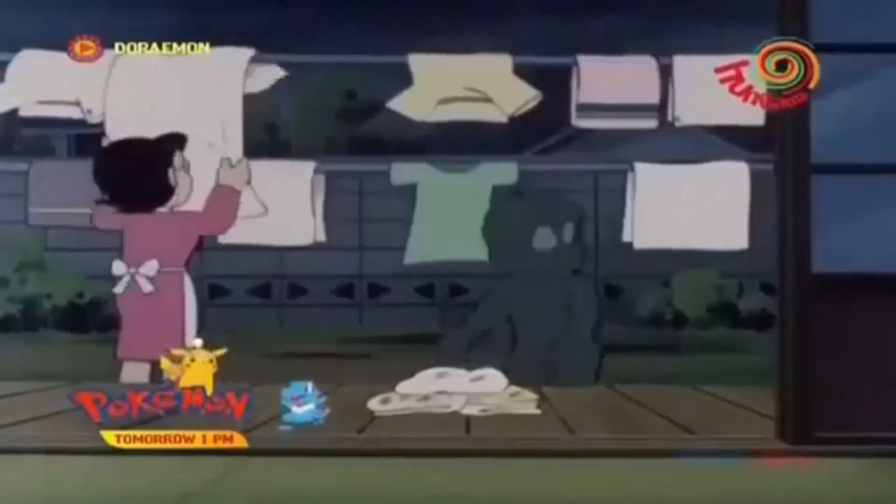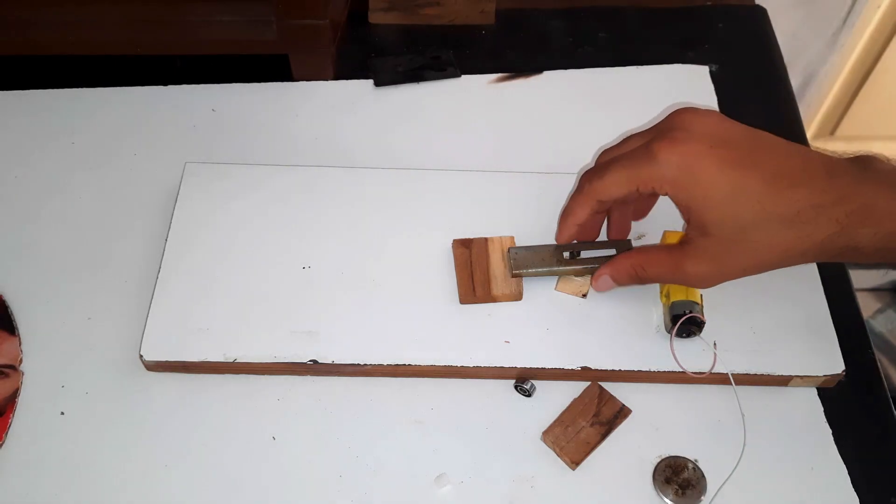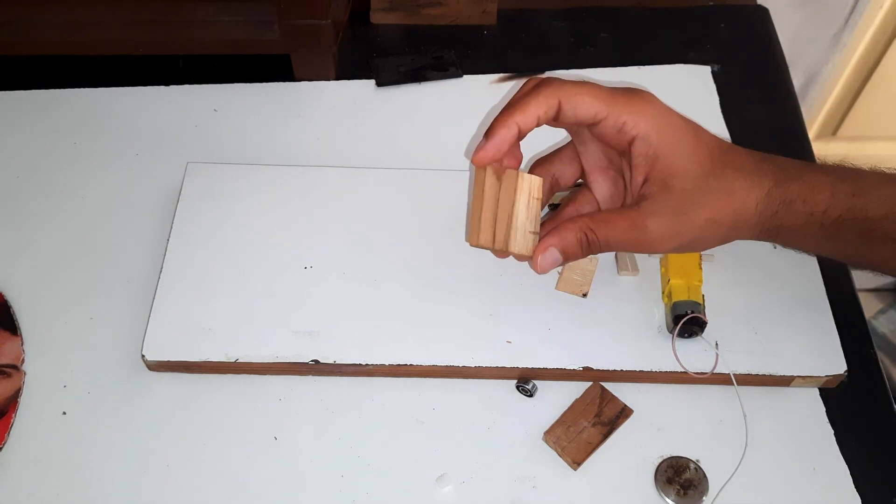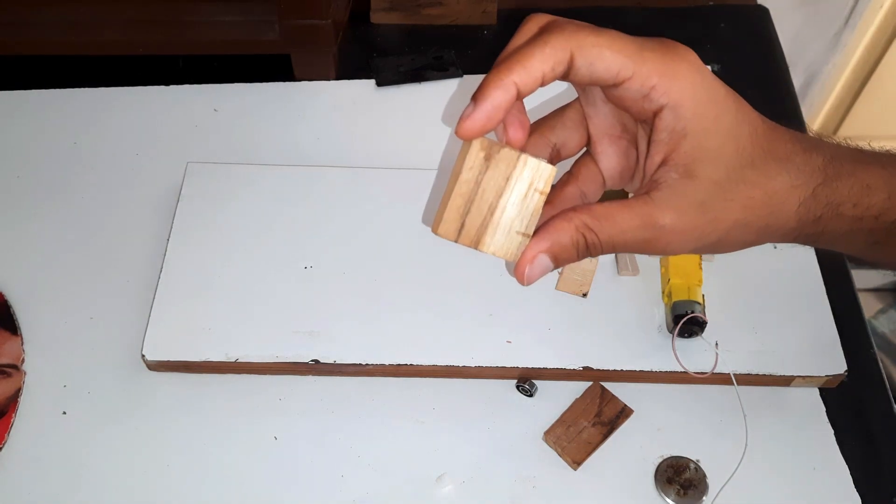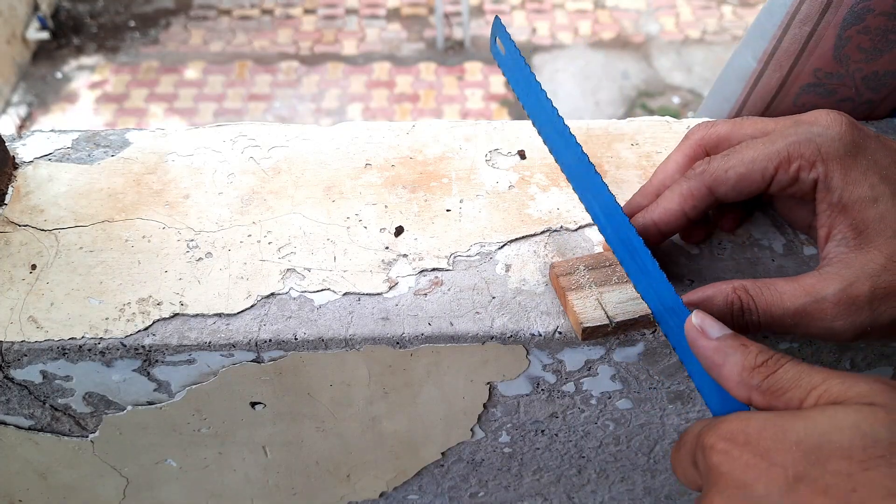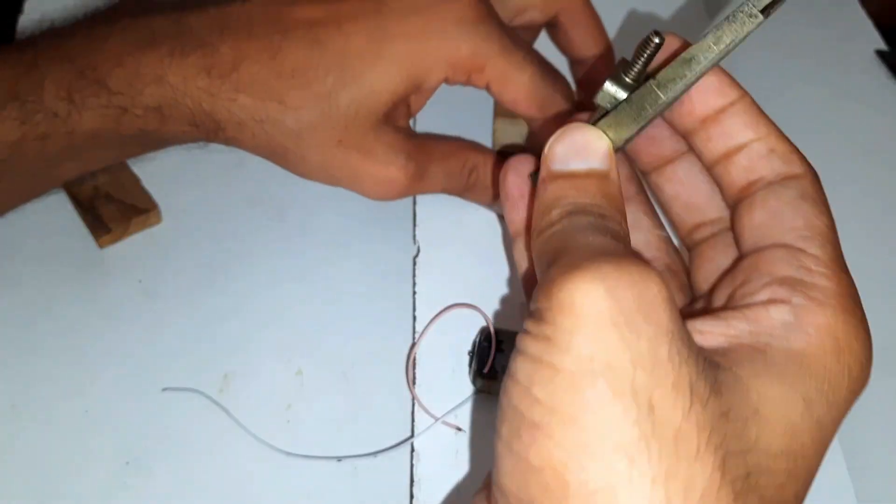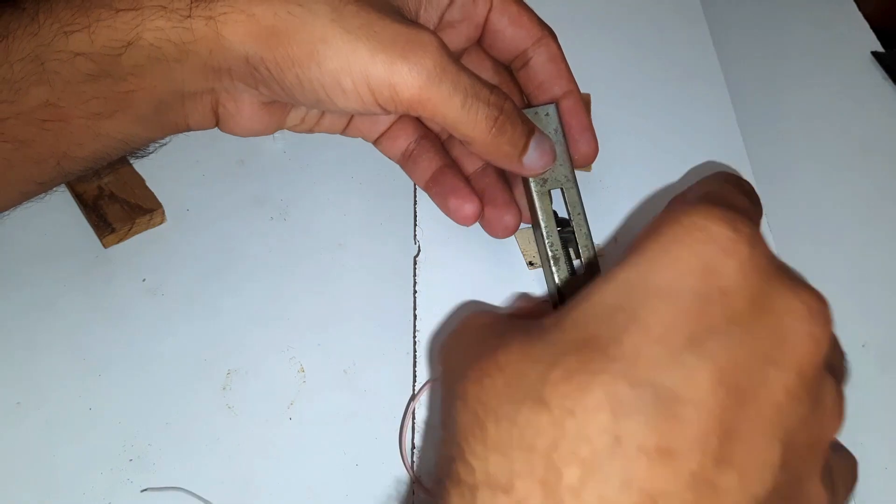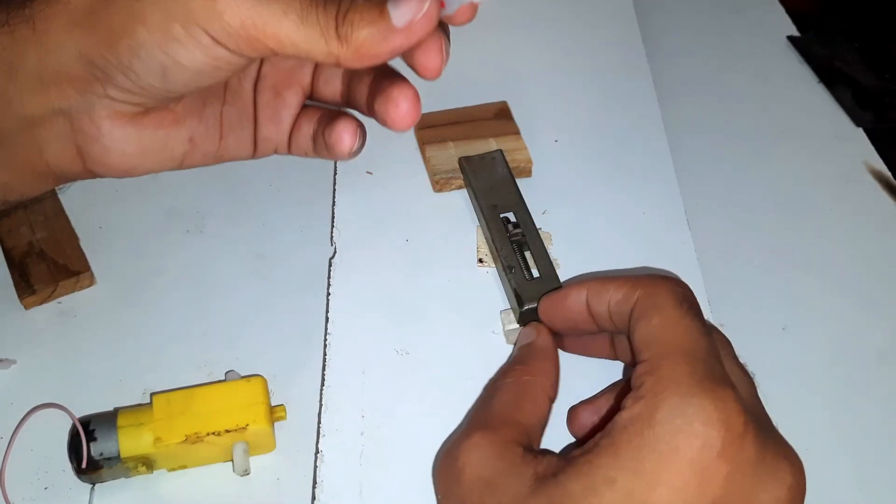This is what Nobita needs to avoid rushing over the drying clothes when it rains. First, I'm making a platform for the gear wheel to move so we will get a smooth motion. Stick the setup in its place.